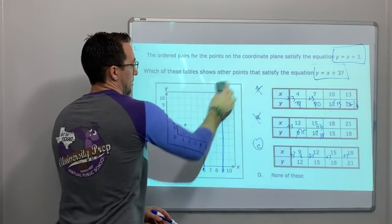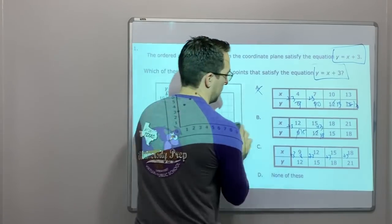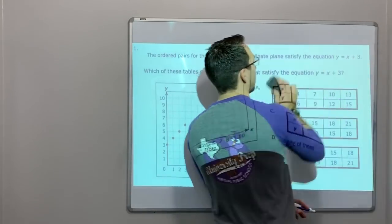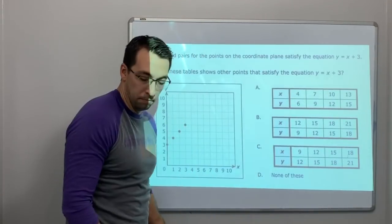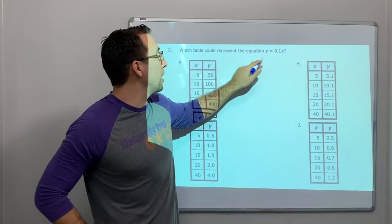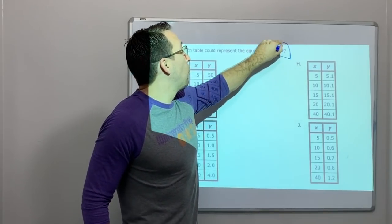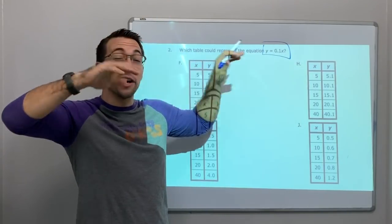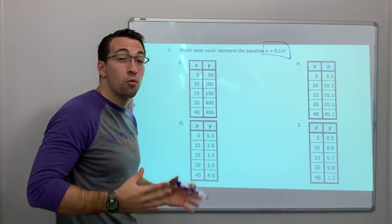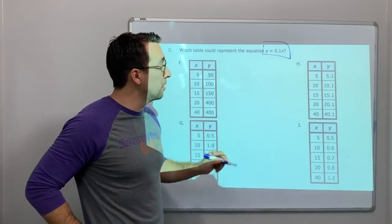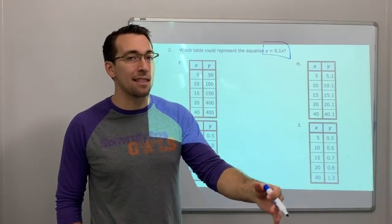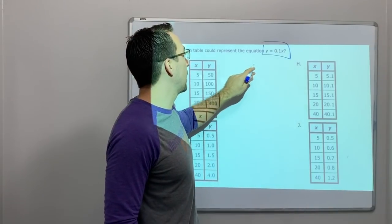Last question for this video. Then we will cut it. Start a new video. Which table could represent the equation? What does that mean? Y equals 0.1x. So anytime you have a number right next to a letter, you multiply. So you have to multiply it by 1, 10. Crazy.